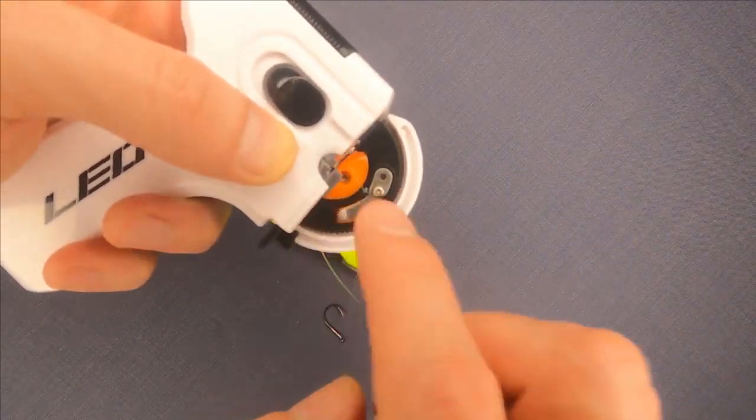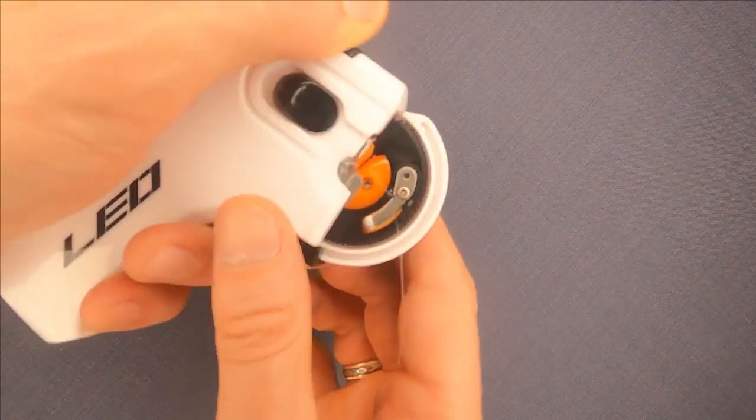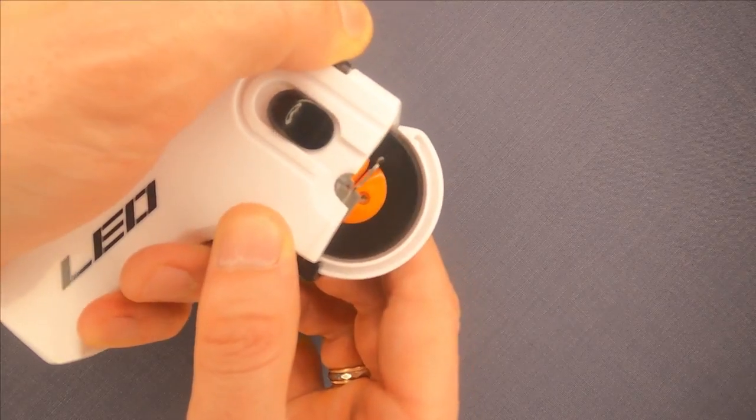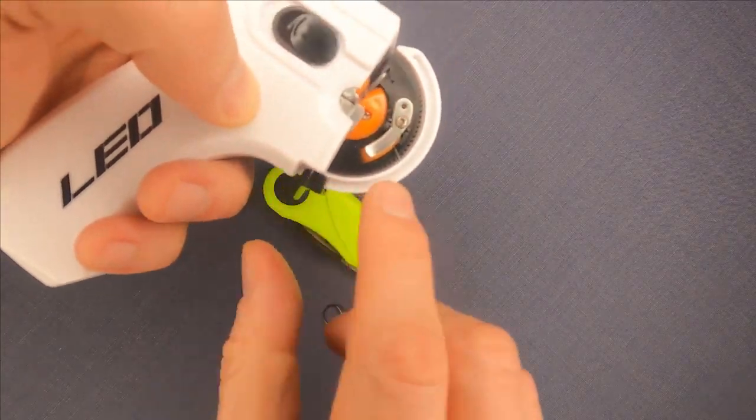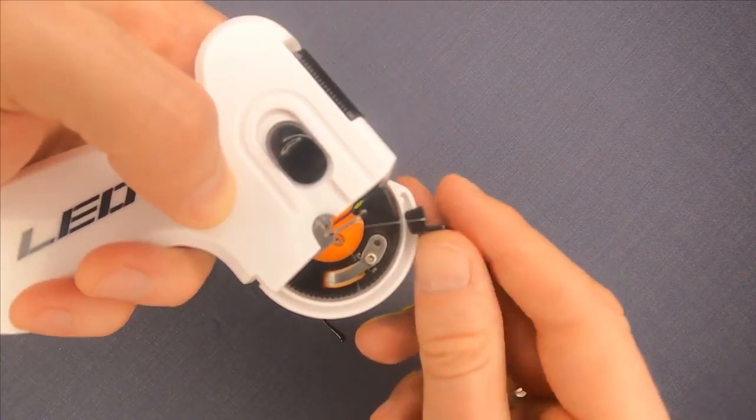Now when we power on the tool, this part will wrap the line around the hook. To power it on, we just pull the top plastic button away from the wheel and wait for it to make around five to seven turns.